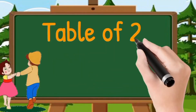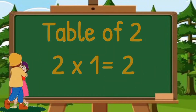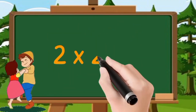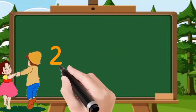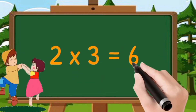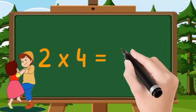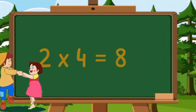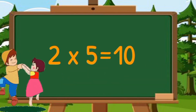Table of two. Two ones are two. Two twos are four. Two threes are six. Two fours are eight. Two fives are ten.